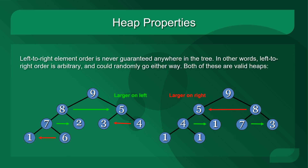Note that left-to-right element order is never guaranteed anywhere in the tree. In other words, this left-to-right ordering is arbitrary and could randomly go either way. In this example, there are two different heaps which are both valid, but the element which is larger is sometimes on the left and sometimes on the right — it really doesn't matter which one is larger and which one is smaller. These are both valid heaps, and yet they turn out very differently. You can have many different left-to-right orderings, and it makes no difference to the semi-ordered property of a heap.